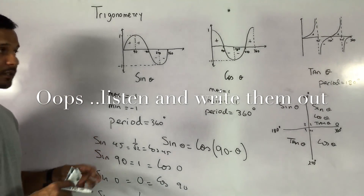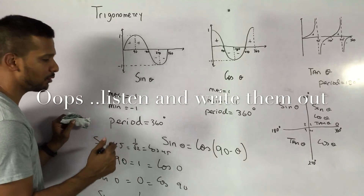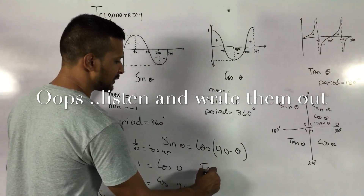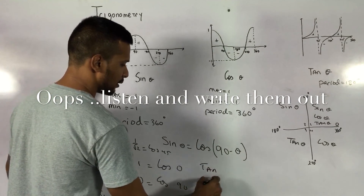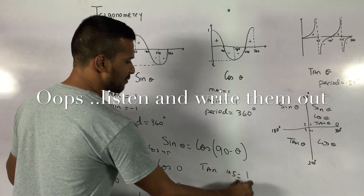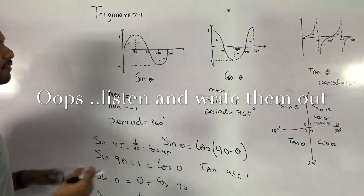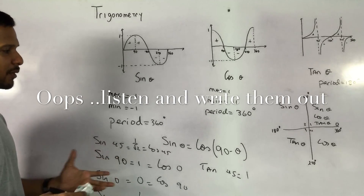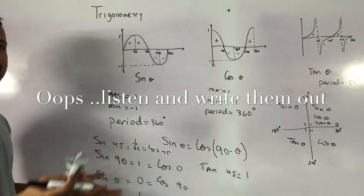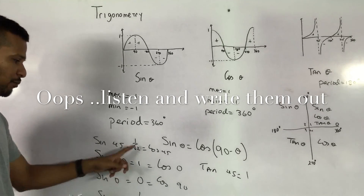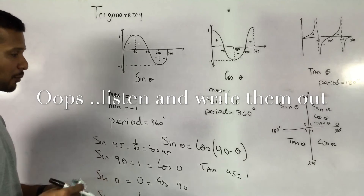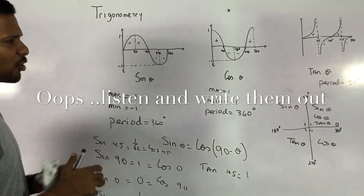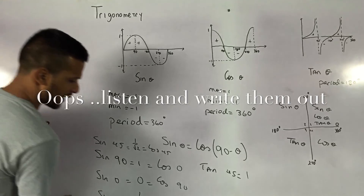Sine 45 equals cos 45, sine 30 equals cos 60, and sine 60 equals cos 30 — these are very important values you must learn. Tan also has key values: tan 45 is one. These values are important because questions sometimes ask you to find the exact value of an expression, and you must know these off the top of your head.